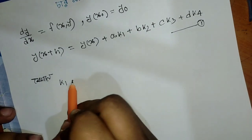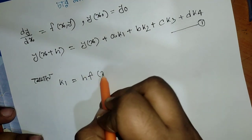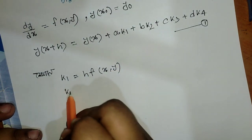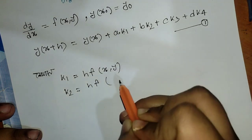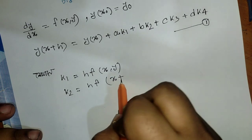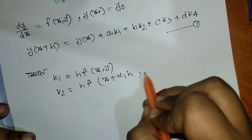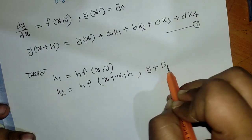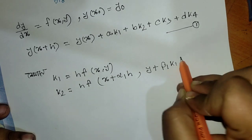k1 is f of x comma y. k2 is f of x plus alpha1·h comma y plus beta1·k1.